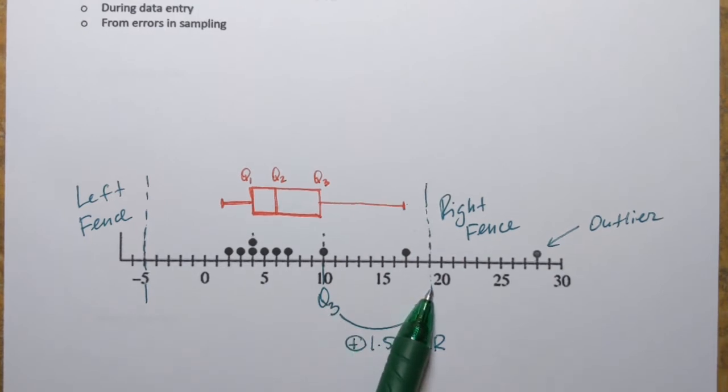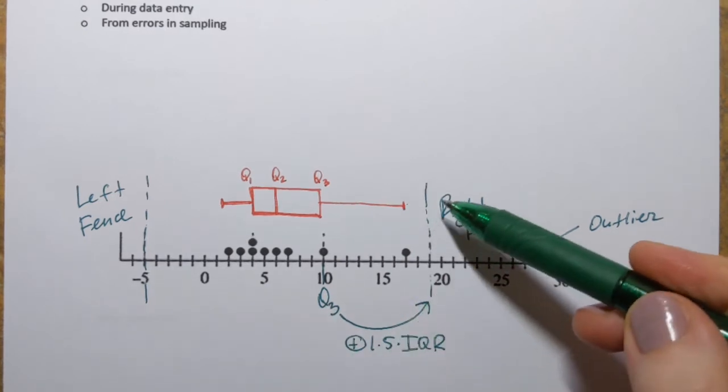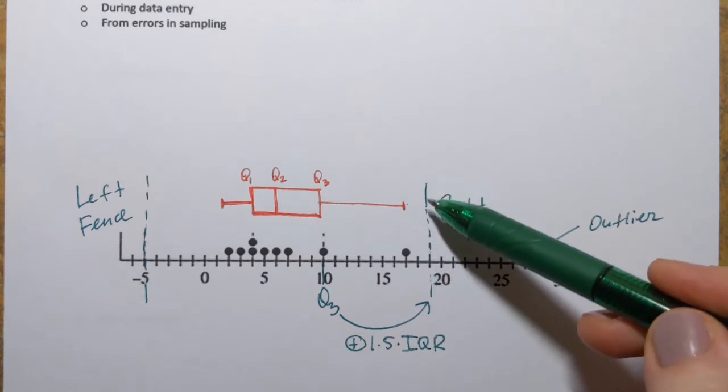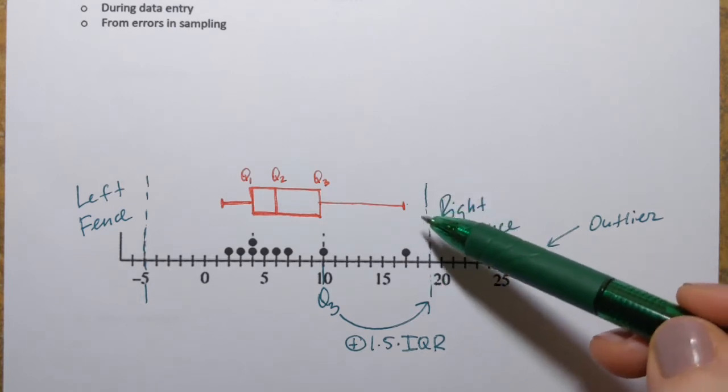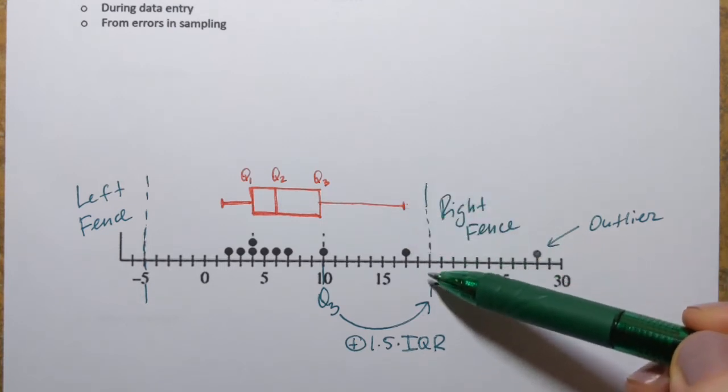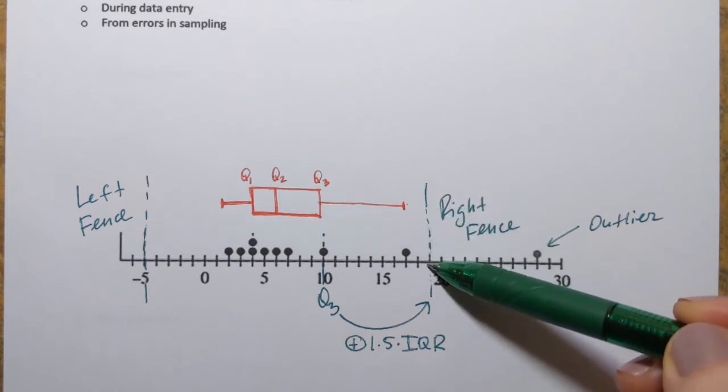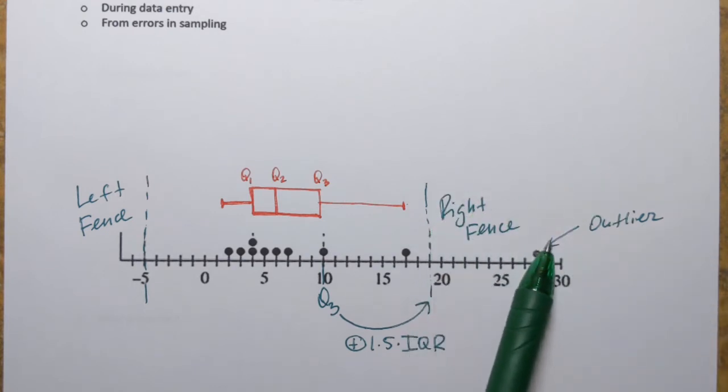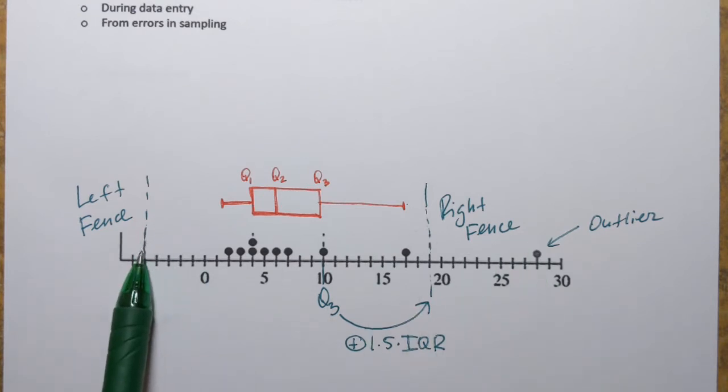By the way, it doesn't have to be drawn. It's not part of the box plot. You know, it's kind of like imaginary fence that I have here. Anything that falls outside it is going to be an outlier. Same goes with extremely small values. There are also outliers. And for that, we have left fence.